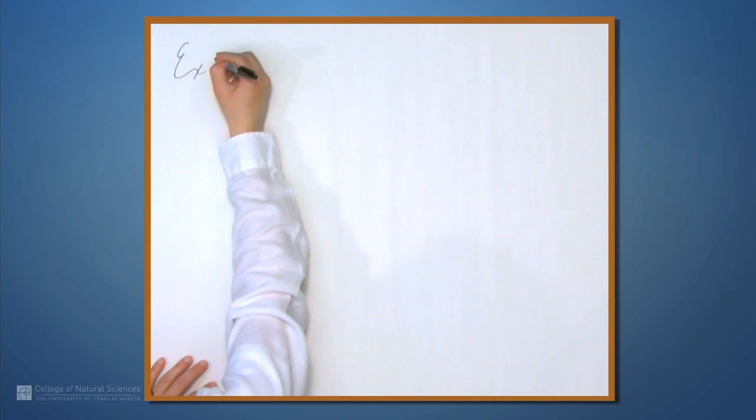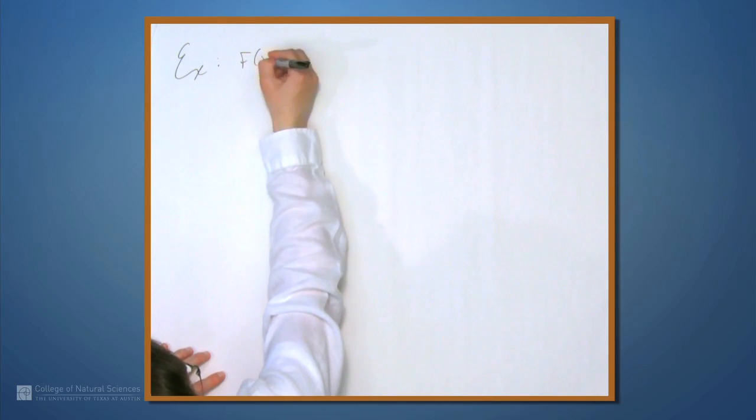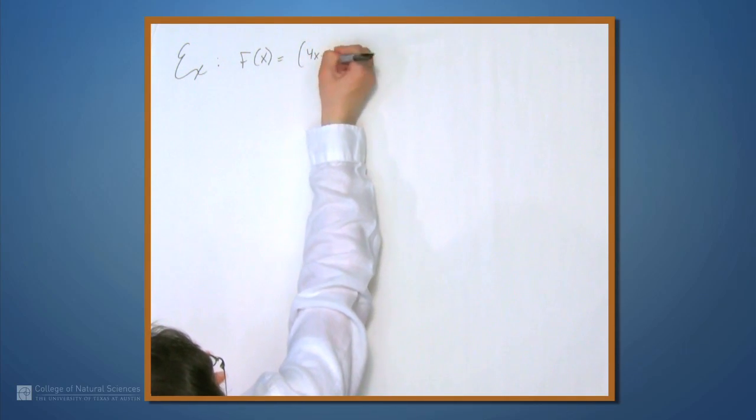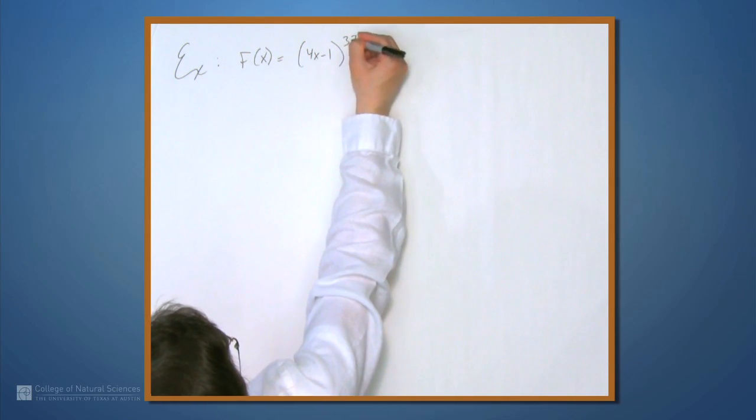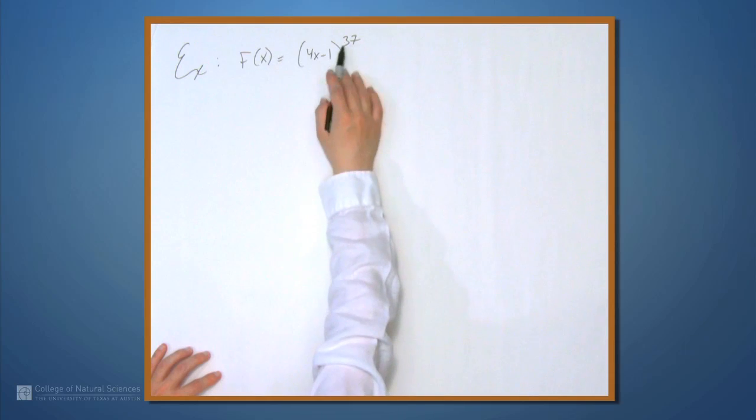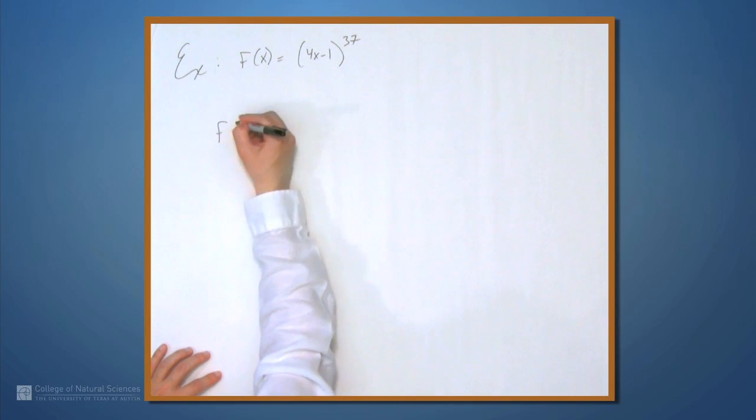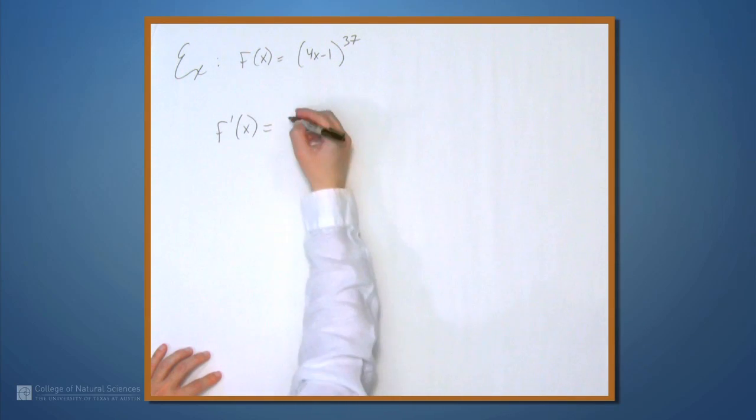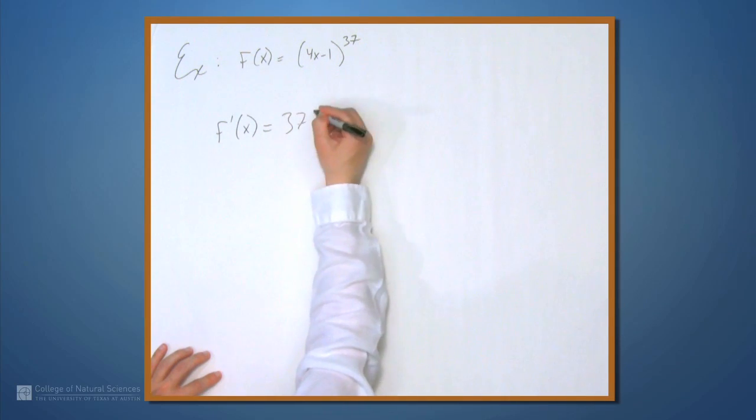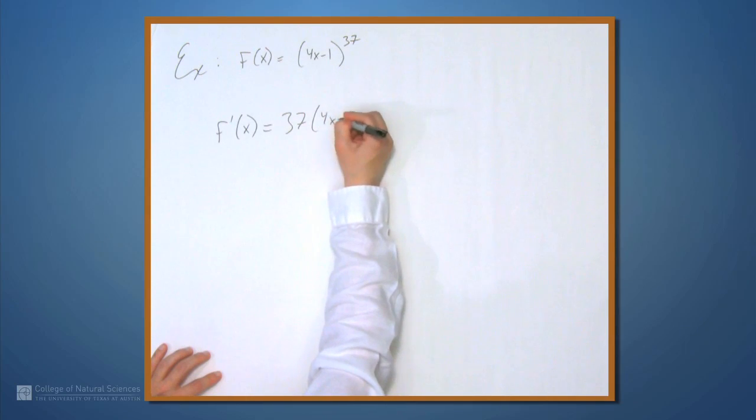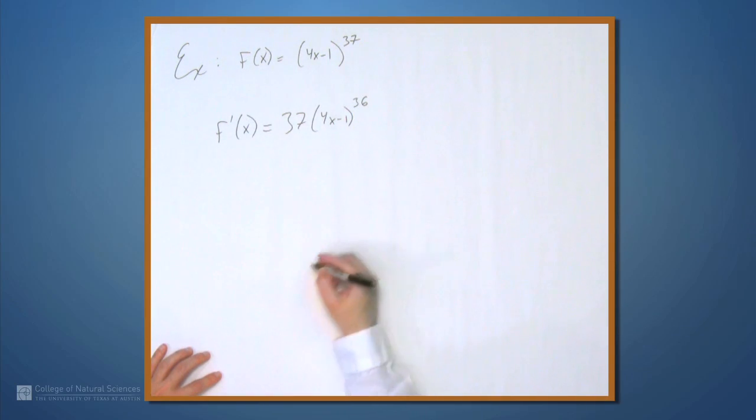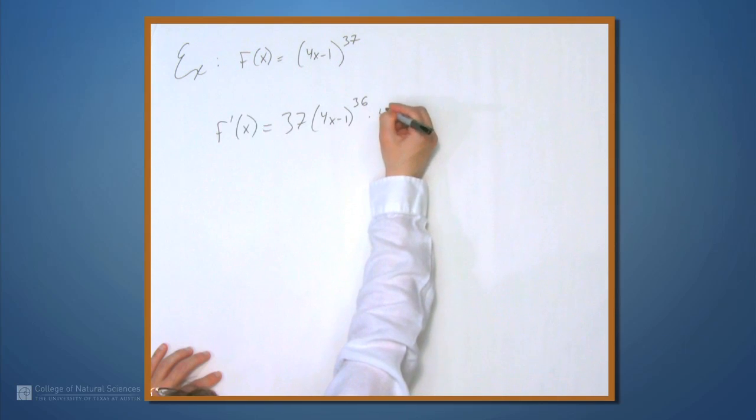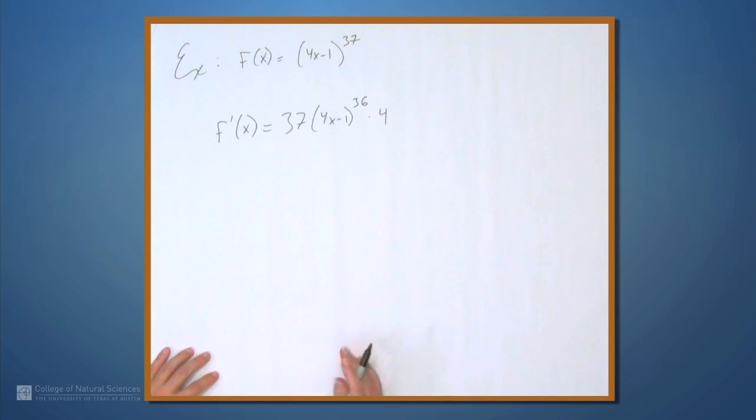Let's look at an example where it's pretty unavoidable. So f, let's stick with 4x-1, but now let's raise it to the 37th power. No way you want to expand this. So here, you don't absolutely need the chain rule, but you sure do want it. This is 37 times 4x-1 to the 36th power times 4. And those are some basic applications of the chain rule.